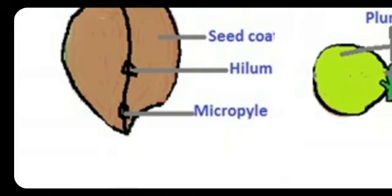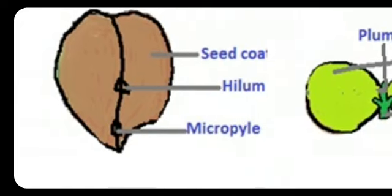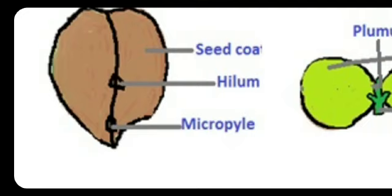The main function of Micropyle is during seed germination. Seed germination means when we put the seed into the soil and it starts to sprout — that time period is called the germinating period. We had studied in ovule that Micropyle is an opening portion where the pollen tube enters through that small pore to fertilize the ovule. Similarly here in the seed, Micropyle exchanges oxygen and water during seed germination.